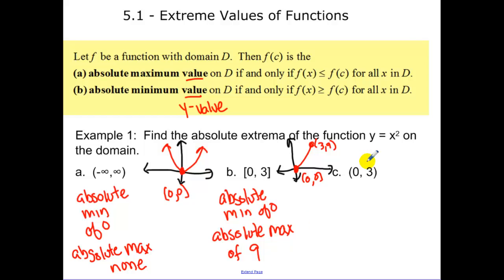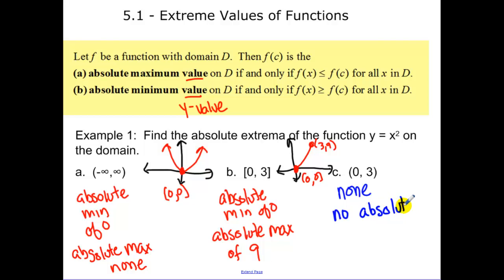Now on the open interval, not including those endpoints, because I can get infinitely close to this absolute min and I can get infinitely close to the absolute max, we would have no absolute max or min. You can get infinitely close, but you're never going to equal that nine value. So this value on the open interval is none.